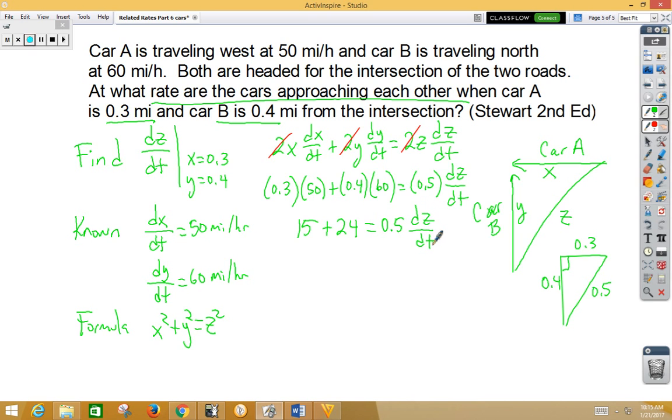So if we divide by 0.5, we get dz/dt equals 78 miles per hour.